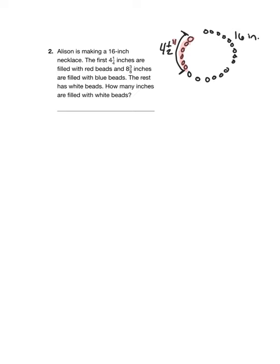And then after that we have eight and three-eighths inches. So that's quite a bit longer. Those are our blue beads. Eight and three-eighths inches are blue beads. And then the rest is white beads. So the rest of it is going to be our unknown, which I guess we could just name white, unknown, question mark. How many inches are filled with white beads? Okay, so we're going to take our total sixteen inches and we're going to add our four and a half inches of red beads plus our eight and three-eighths inches of blue beads plus our unknown amount of white beads. So I guess we'll call that w for white beads.